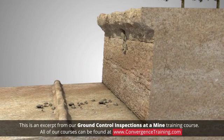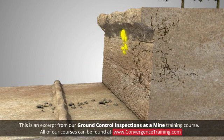Signs of instability include stress cracks, overhangs, loose unconsolidated material, or fallen rocks outside of drop zones and barriers.